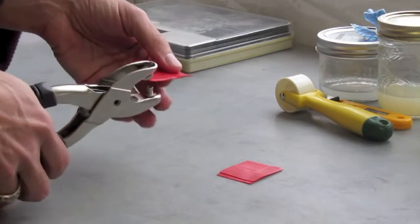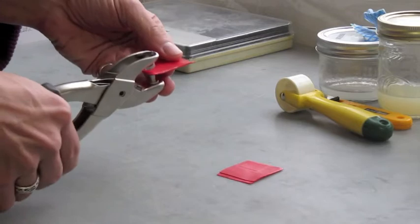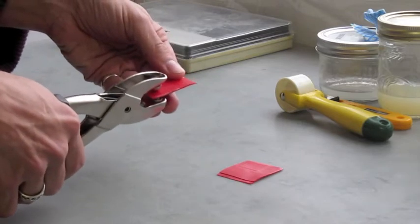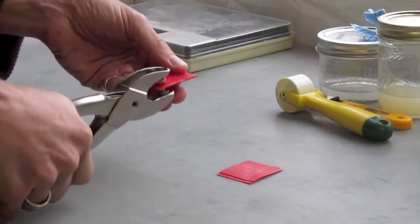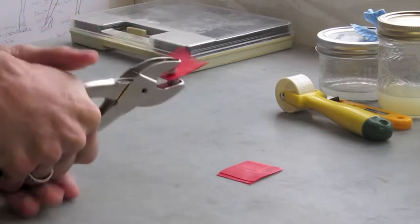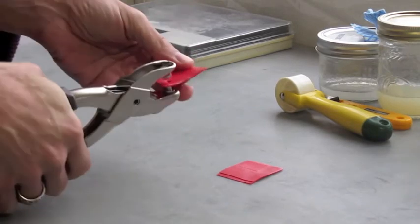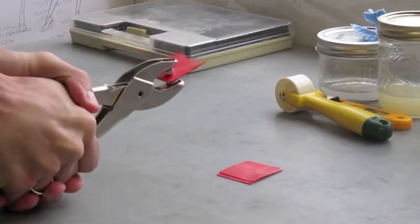Carefully position your punch in the middle of the reinforcement. Check both sides if possible for proper alignment. Use slow and steady pressure to punch through all the layers. Sometimes, a second punch is required to get a clean hole.